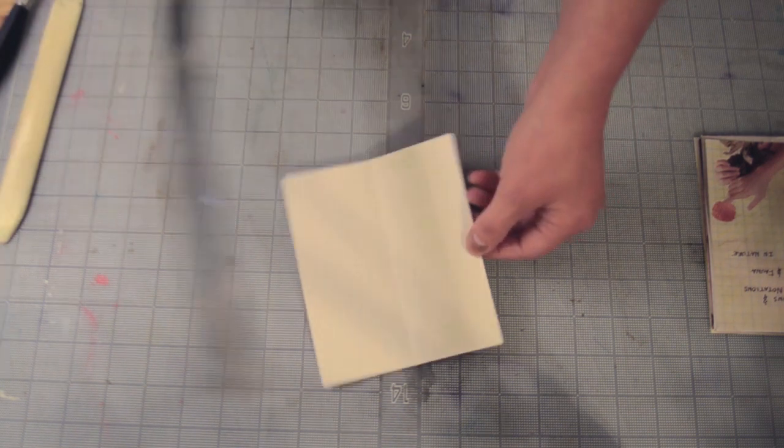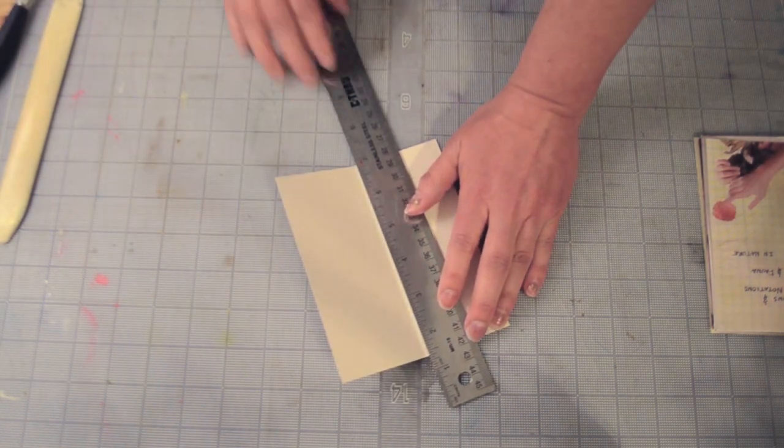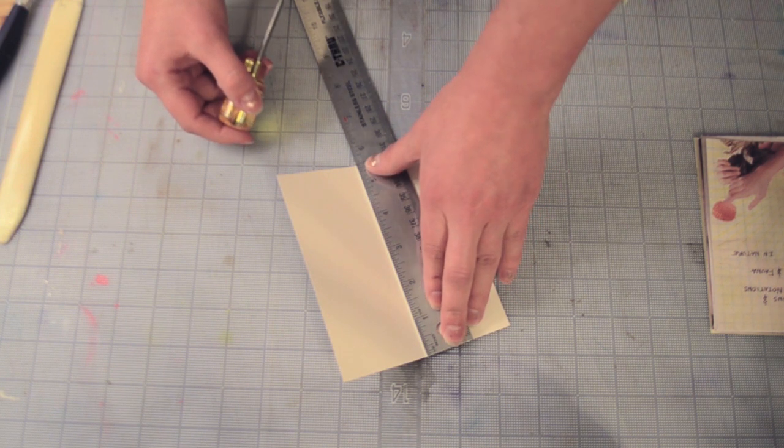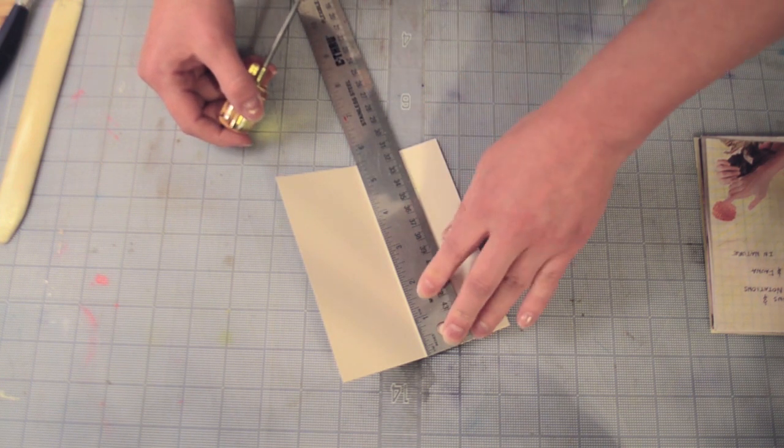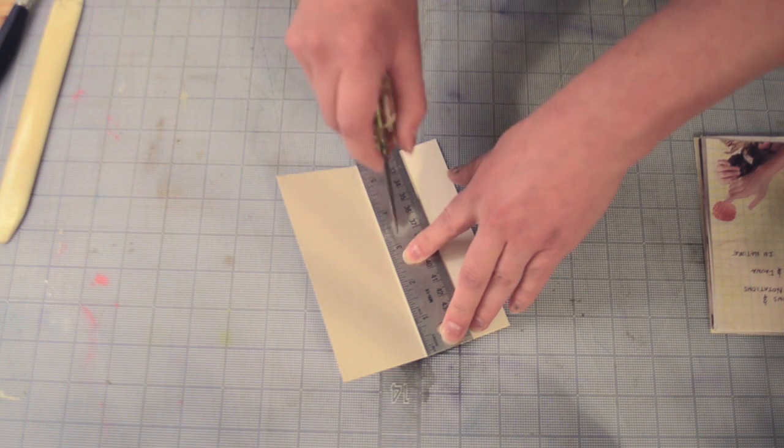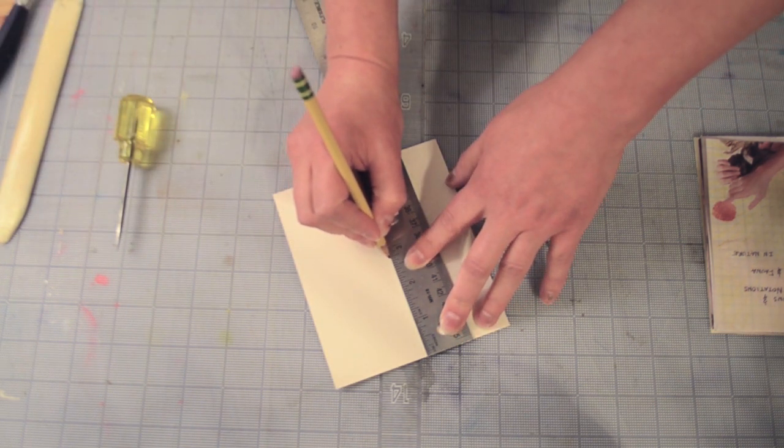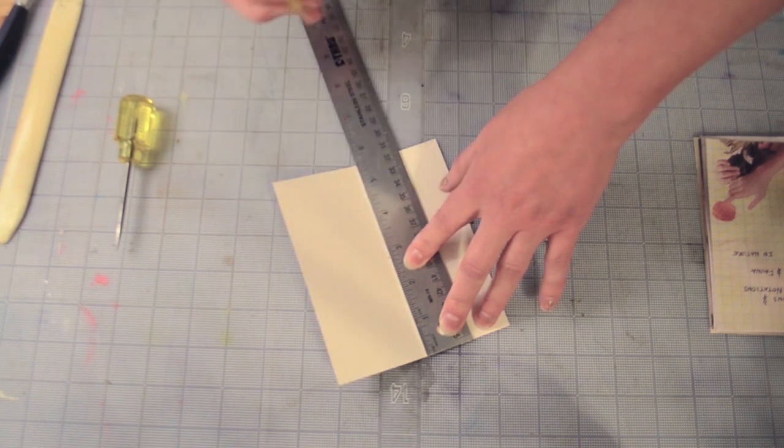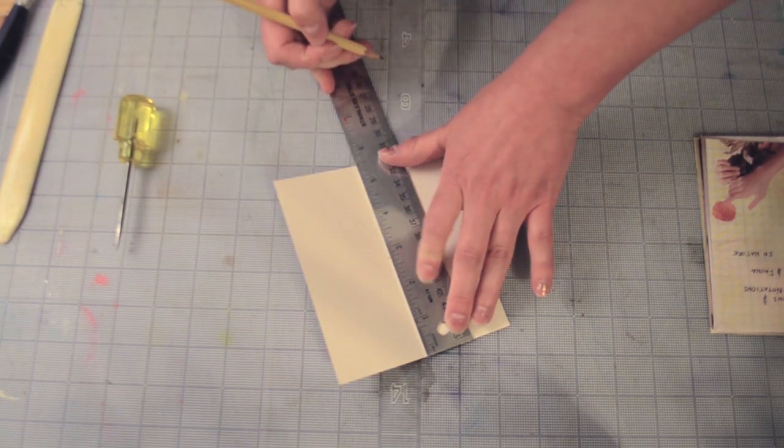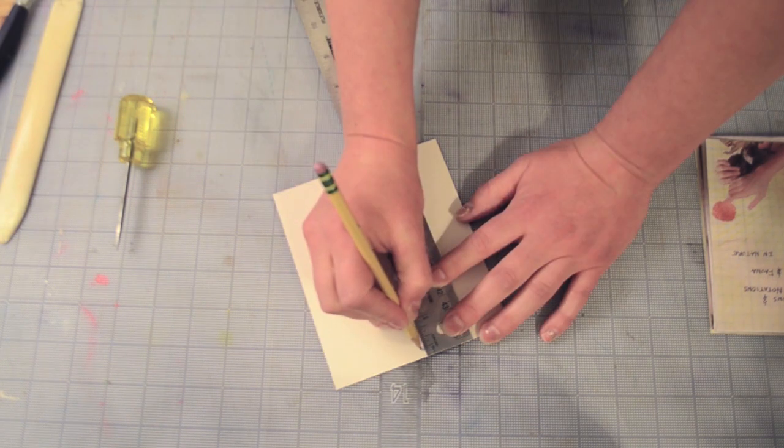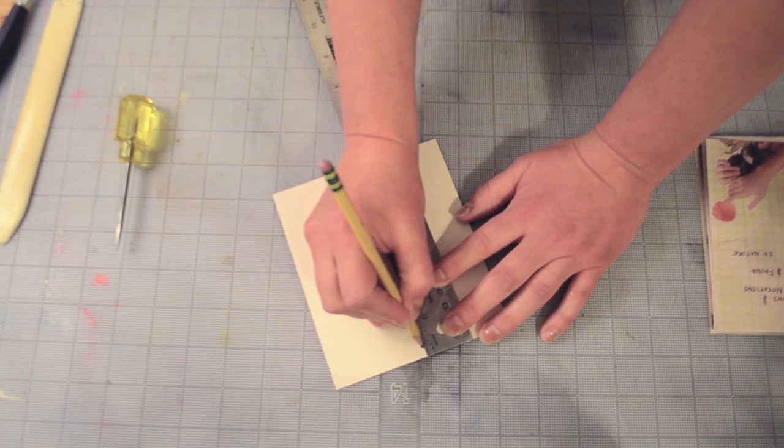And then you can measure where the center is. So in my case, my book is 5.5, so the center is going to be 2.75. And you can mark it first. And then I would make the other two sewing stations, maybe about a quarter inch from the edge.